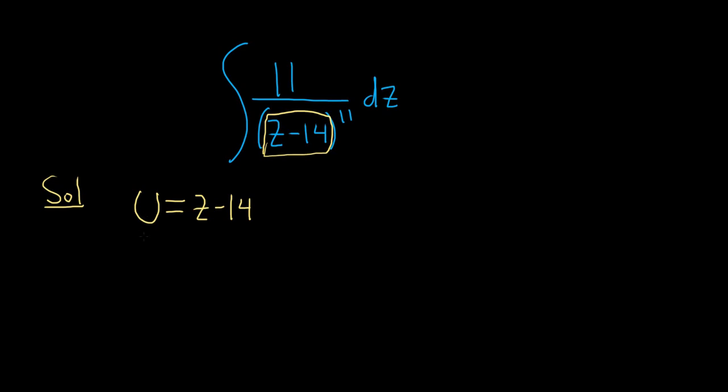After that, we compute the derivative. So the derivative of u is just du, and the derivative of z is just dz. The 14 goes away because its derivative is 0.